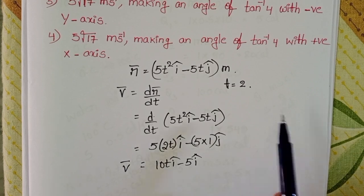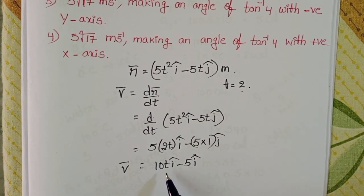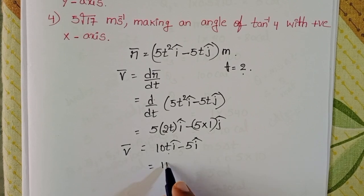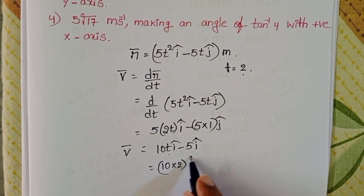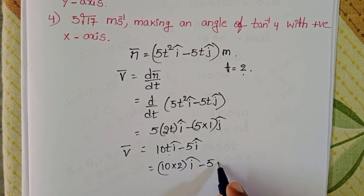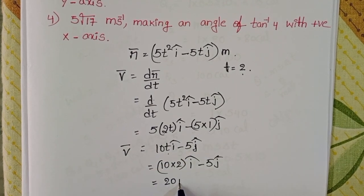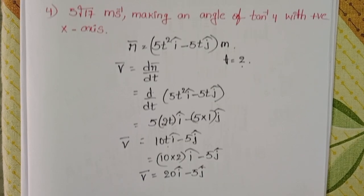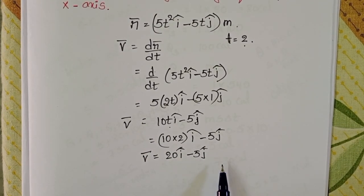We have to find velocity at time equal to 2 seconds. Substituting t equals 2: 10 into 2 i cap minus 5 j cap, giving 20 i cap minus 5 j cap. This is the required velocity vector: v bar equals 20 i cap minus 5 j cap.